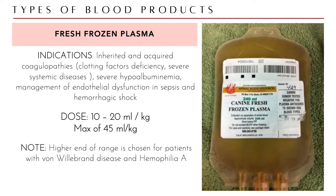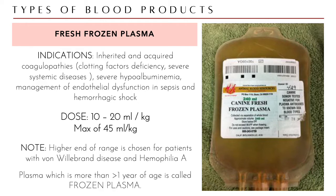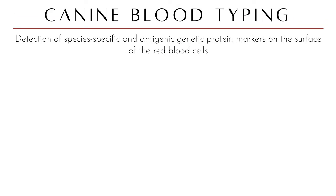There is a maximum dose of 45 ml per kg used for severe cases. The higher end of the range — 20 ml per kg — is chosen for patients with von Willebrand disease and hemophilia A. Frozen plasma, which is plasma older than one year, may not work as well as fresh frozen plasma in terms of protein content, so selection depends on what you need from the blood product.